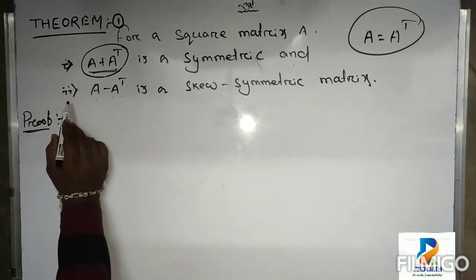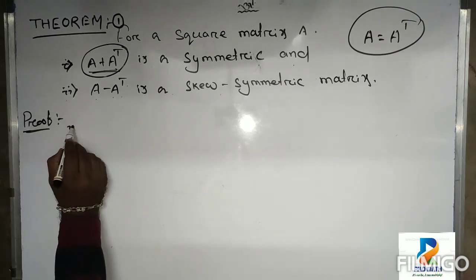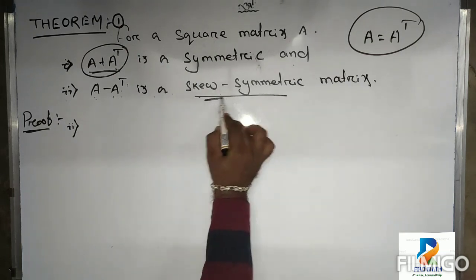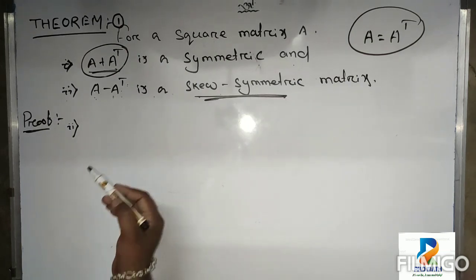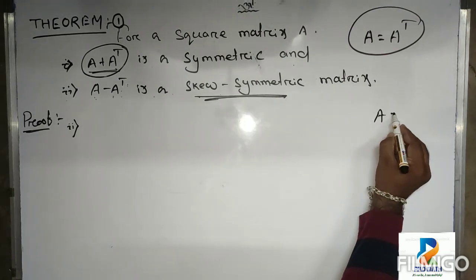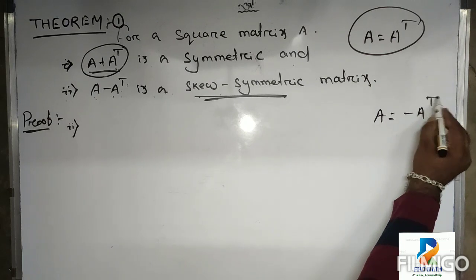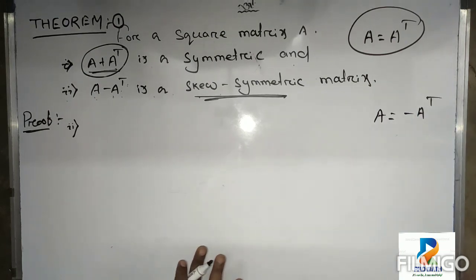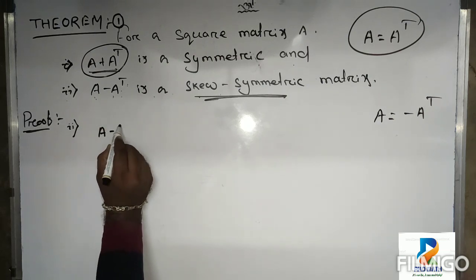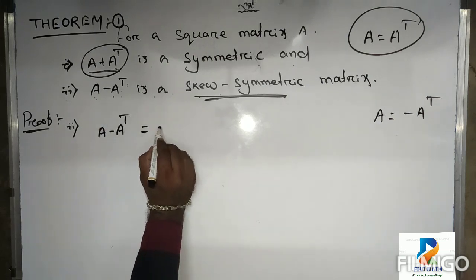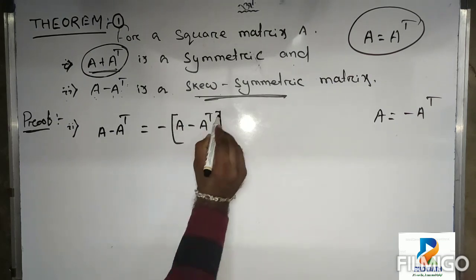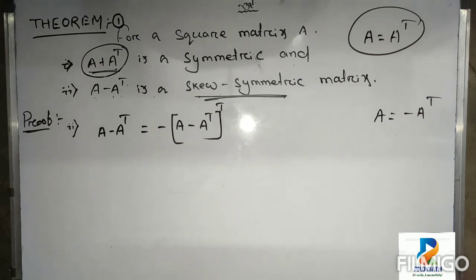Now the second proof: A minus A transpose is a skew symmetric matrix. We know that skew symmetric means A equals minus A transpose, or equivalently A transpose equals minus A. So we need to show that A minus A transpose equals minus of A minus A transpose whole transpose.